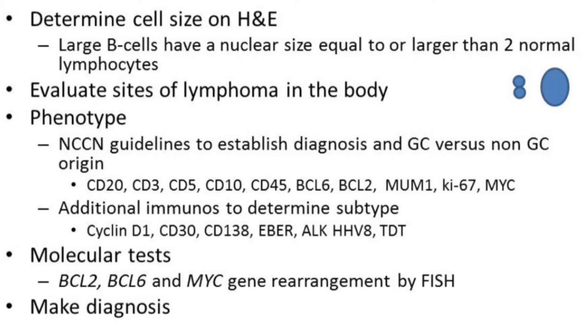As you can see, I've drawn two normal lymphocytes, and the blue cell next to them is greater than two times the size — so that's going to be a high-grade B-cell.